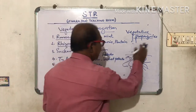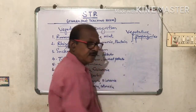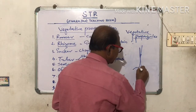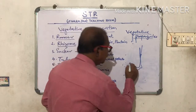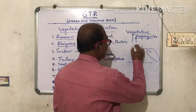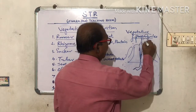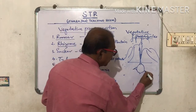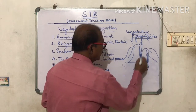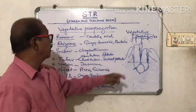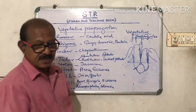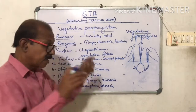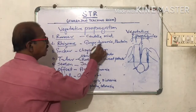Then Plantain — we plant a small plant, it becomes a big plant, and it enlarges by storing food, and from here small plantings come up. So Ginger, Turmeric, Plantain, etc. are examples for Rhizome. Rhizome is the underground stem that becomes enlarged due to the storing of food.